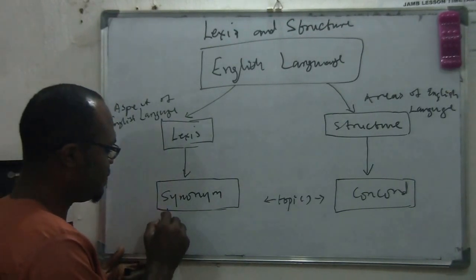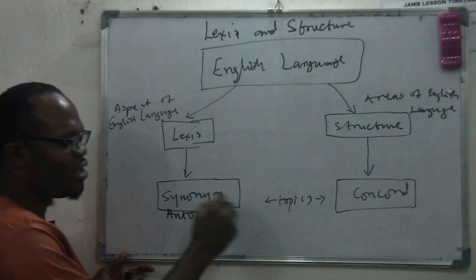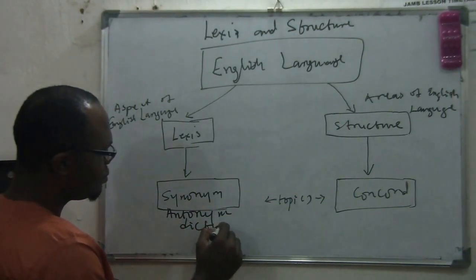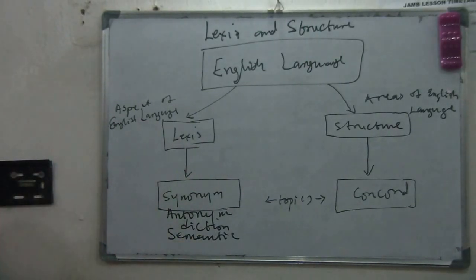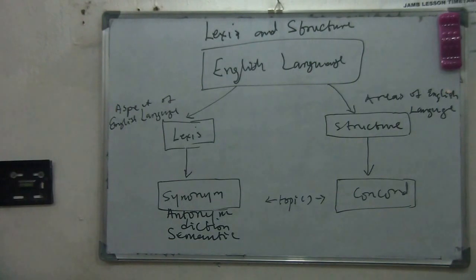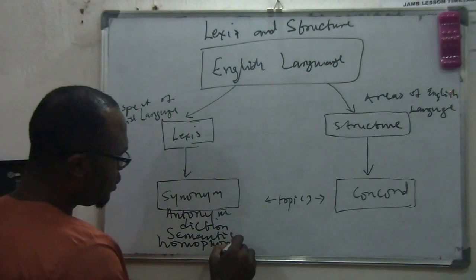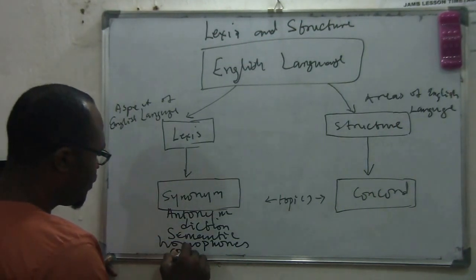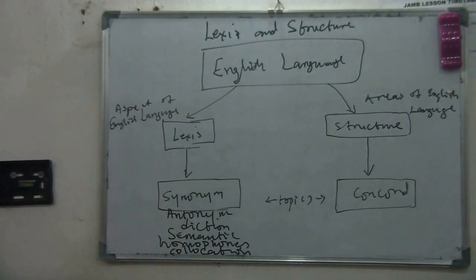Under lexis you can see subjects like synonym — nearest in meaning — and antonym — opposite in meaning. You can also see other topics like diction and semantics. Diction simply means collection of words used for a particular group. We also talk about homophones — words that sound the same — and collocation — the company of words.